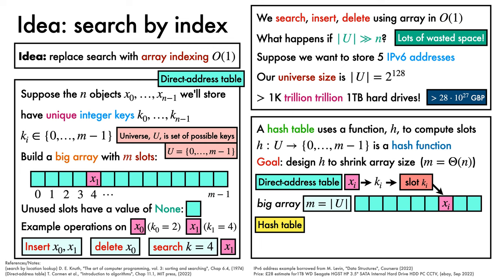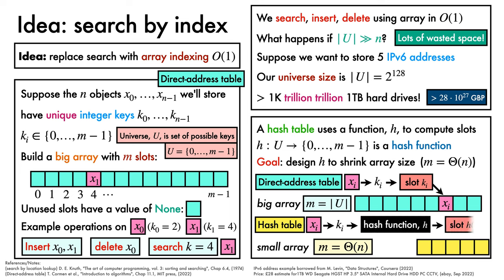With a hash table, our goal is to get away with a small array with a small number of slots that is proportional to the number of objects stored. To insert an object xi, we examine its key ki, and pass it to a hash function h, then use the slot h(ki) to store the object. Searches and deletions use the same indexing scheme.